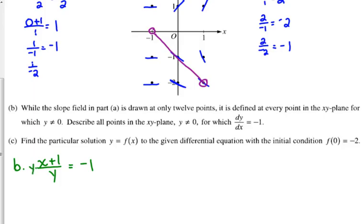Multiply both sides by y, so x + 1 equals negative y. I mean, they solved it for positive y, so they moved the negative over. So y equals negative x minus 1.